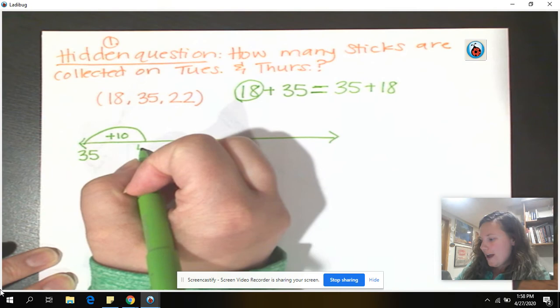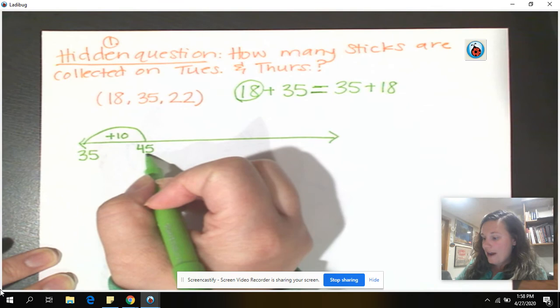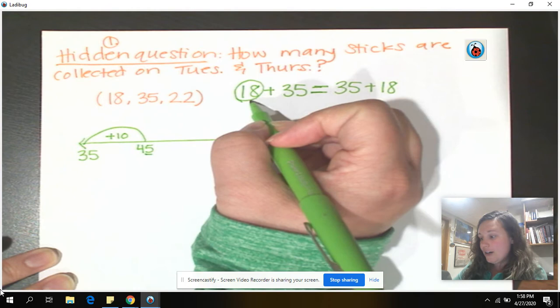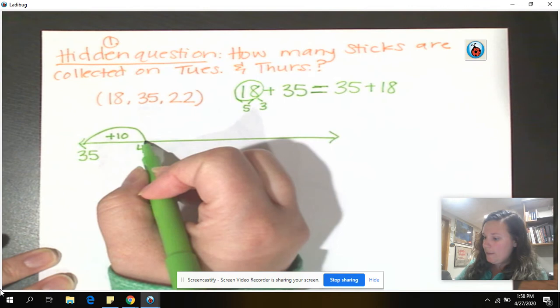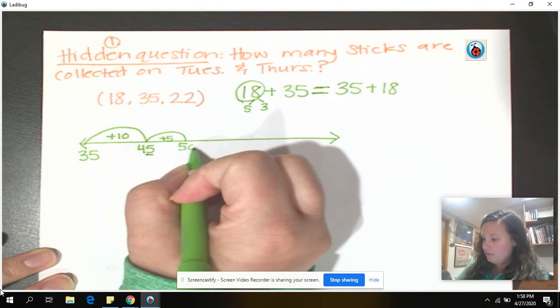So now we have that 8. Now, I have 45. I have 5 ones here. Are there 5 ones in my 8? There are. If I were to decompose that 8 into 5, what would my other number be? I have a part. I need my missing part. It is a 3. So if I jump by 5 here, that means I get to a friendly number of 50. And then I have my 3 to go.